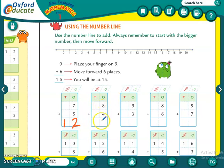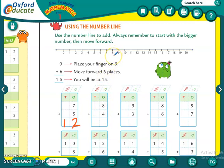Eight plus four — which is the bigger number? In doono mein se bigger number kaun sa hai? Eight. Then we have to find eight on the number line. Eight mein kitne add karne hain? Four. Let us count four numbers forward: one, two, three and four. What is eight plus four? Twelve.